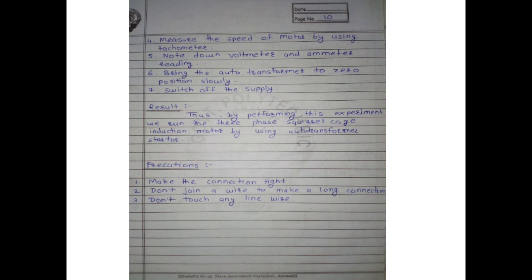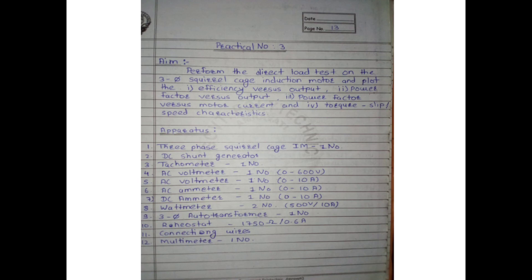Result: by performing this experiment, we successfully ran the 3-phase squirrel cage induction motor using the auto-transformer starter. Precautions: make connections tight, do not use joined wires to make long connections, and do not touch any live wire while performing the experiment.